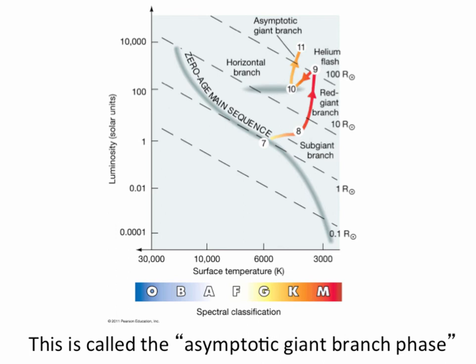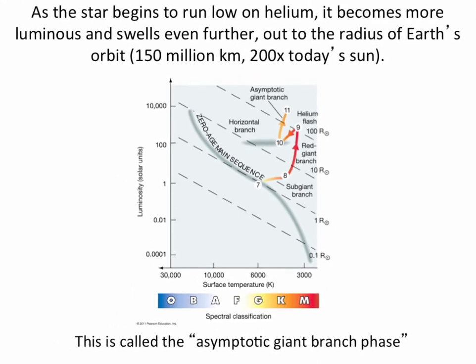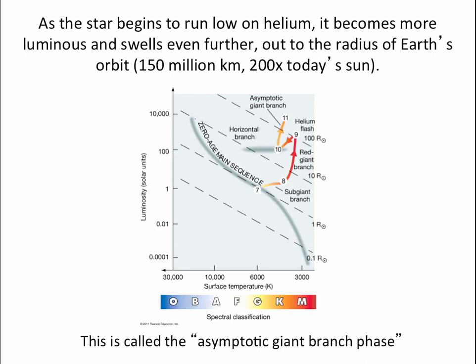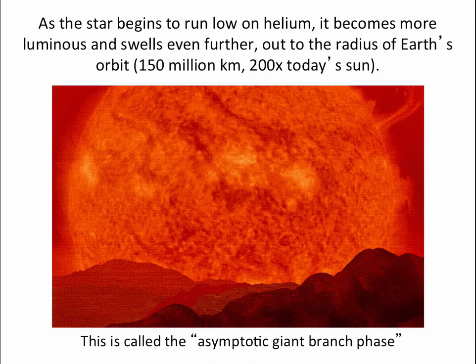At this point the sun will be 200 times its current radius — large enough to swallow the Earth. Whether Earth actually gets swallowed is hard to say, because at the same time the sun will be losing matter, weakening its gravity and allowing Earth to move further away. Some simulations show the sun will swallow Earth; others show Earth will move out enough to survive, though the surface will still get hot enough to turn it into lava. We won't be living here at that time.